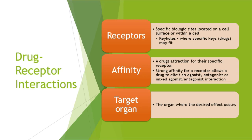Drug-receptor interactions: the receptor is a specific biological site located on a cell surface or within a cell — like a keyhole where only a specific key, or drug, will fit. Affinity is a drug's attraction to its specific receptors. Strong affinity for a receptor allows the drug to elicit an agonist, antagonist, or mixed agonist-antagonist reaction. The target organ is the organ where the desired effect occurs.